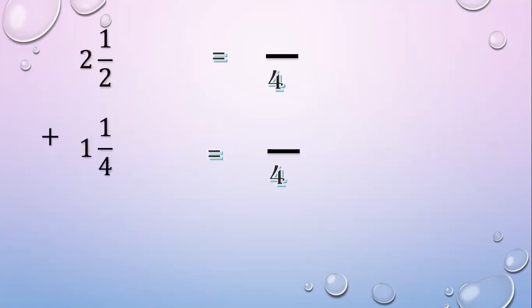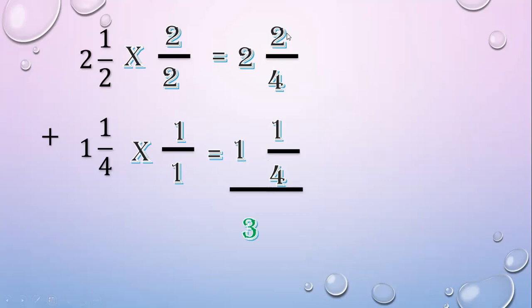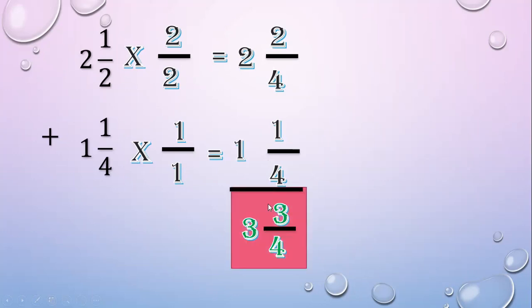Then change the denominator to 4. For 2 to make it 4, we multiply 2. For 4 to make it 4, we multiply 1. Then 1 times 2 equals 2; 1 times 1 equals 1. Copy the whole numbers 2 and 1. Add: 2 plus 1 equals 3. Add the numerators: 2 plus 1 equals 3. Copy the denominator: 4. Since 3 and 4 have no common factors, the final answer is 3 and 3 fourths.